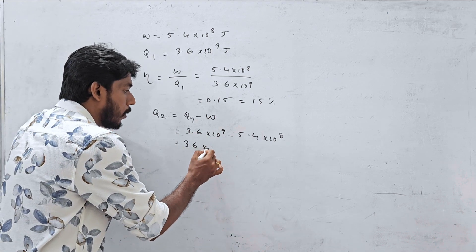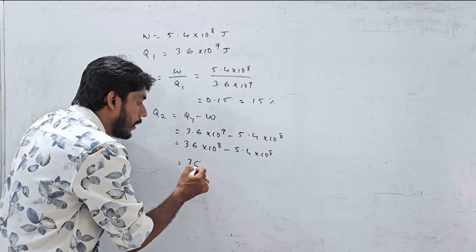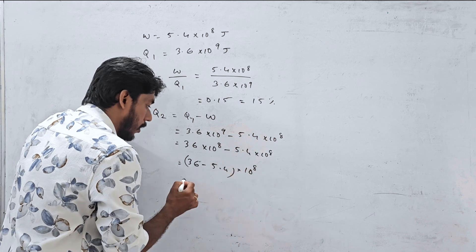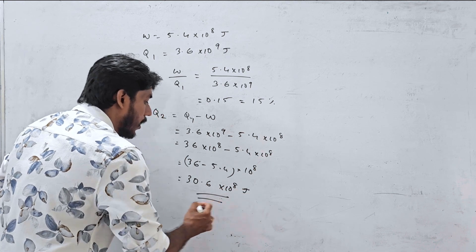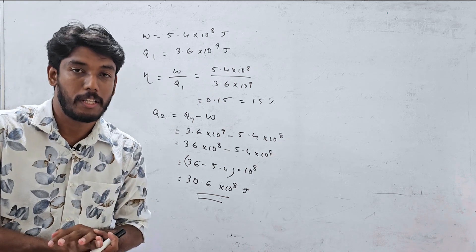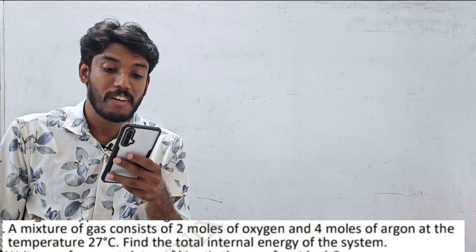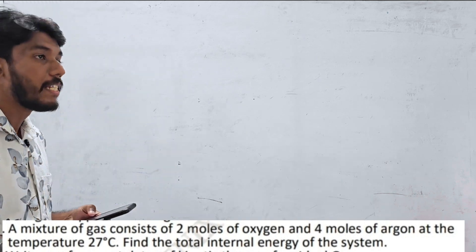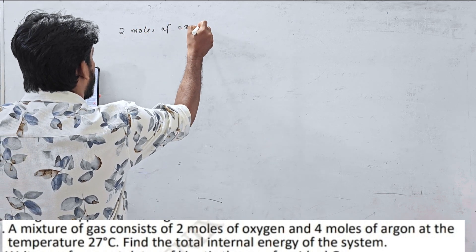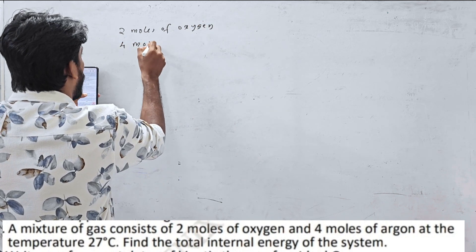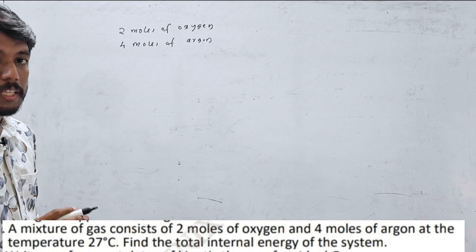The heat rejected Q2 = Q1 - W = 3.6×10⁹ - 5.4×10⁸ = 30.6×10⁸ joules per minute. Next problem: a mixture of gas consists of 2 mol of oxygen and 4 mol of argon at temperature 27°C. Find the total internal energy of the system.